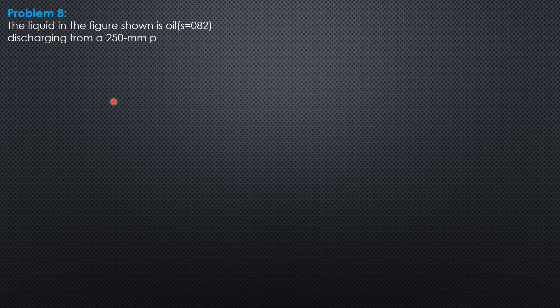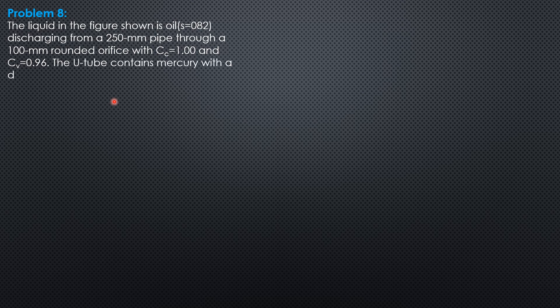Hi everyone, this is Example 8 on orifices, tubes, and weirs under constant head or steady flow. The liquid in the figure shown is oil of specific gravity 0.82, discharging from a 250 mm pipe.